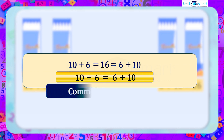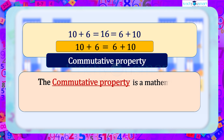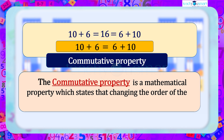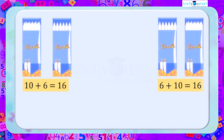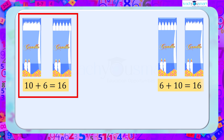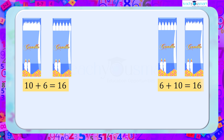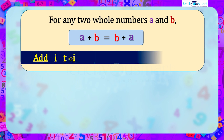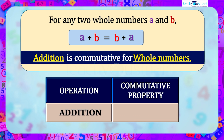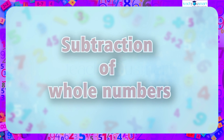We can see that changing the order of numbers does not affect the result. This property is called the commutative property — a mathematical property which states that changing the order of the operands does not affect the result of the operation. Generally, for any two whole numbers a and b, a plus b equals b plus a. That is, addition is commutative for whole numbers.